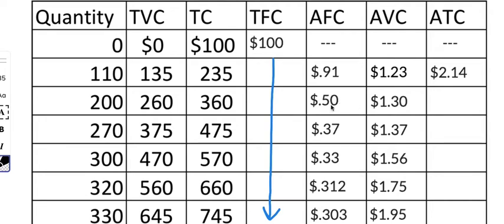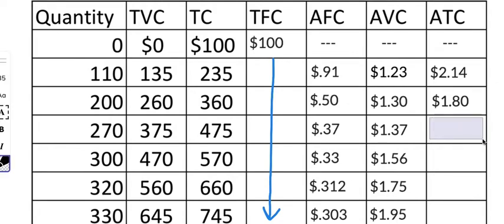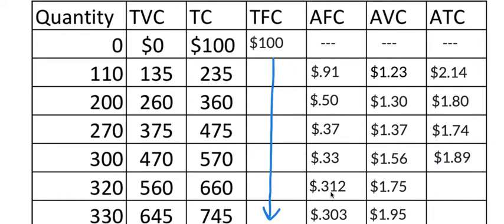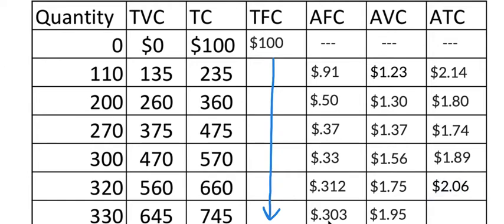Let's continue on with the rest of the calculations. $0.50 and $1.30 — that's pretty easy, that's going to be $1.80. And then $1.37 and $0.37 — that's going to be $1.74. And then $1.56 and $0.33 — that's going to be $1.89. And then $0.31 and $1.75 — that's going to be equal to $2.06. And lastly, $0.30 and $1.95 — that's going to give us $2.25.